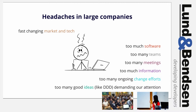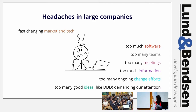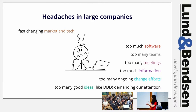In the context of really fast-changing market and tech — that's the demand side — we have too much software today. We don't have time to sunset outdated software, and we have very little time to pay off our technical debts. Software problems generate second-order problems: too many teams, too many meetings, too much information, too many ongoing change efforts, and too many good ideas from consultants like DDD demanding our attention. It's kind of a big mess.